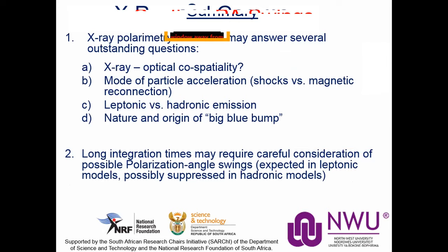In summary, high-energy polarimetry can really help answer several questions: X-ray and optical co-spatiality — if they are produced co-spatially, polarization signatures should be very similar. The mode of particle acceleration — shocks versus magnetic reconnection — may be probed with high-energy polarimetry. We can probe leptonic versus hadronic high-energy emission scenarios, and probe the origin of the big blue bump seen in a few blazar SEDs. The key caveat remains that polarization angle swings may be a serious problem for analyzing data from instruments like IXPE or AMEGO if and when they are launched.